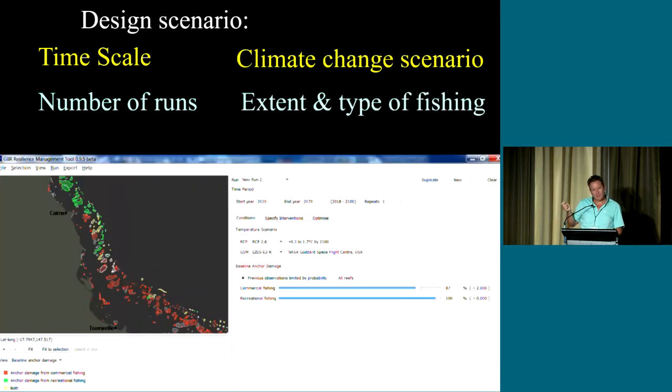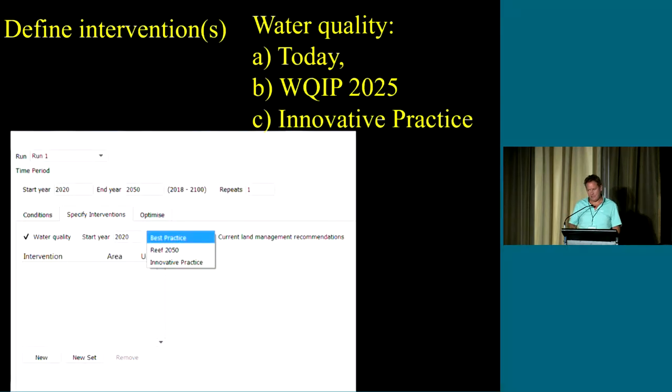You can switch to different levels of intensity, the extent and type of fishing that's there. This is again bringing in those data layers that we've developed or adapted in this case for recreational fishing. So you set up your current situation and then you define the interventions of interest.